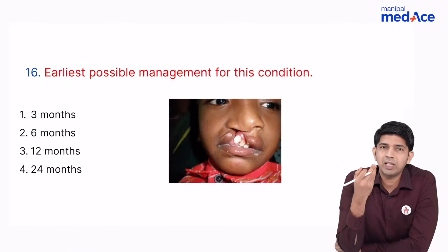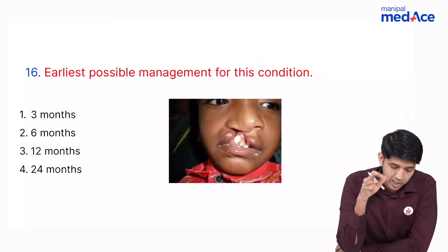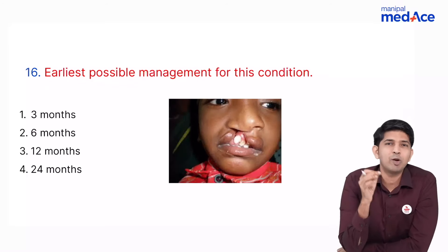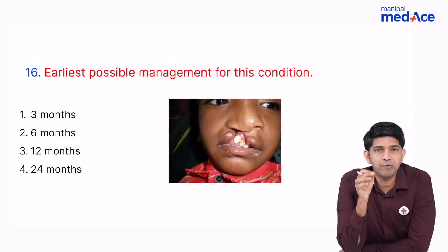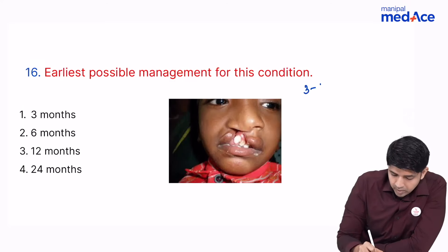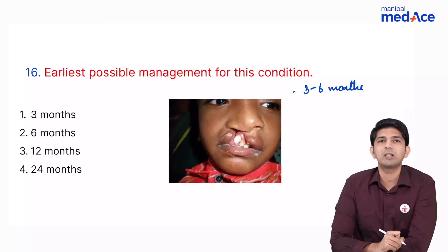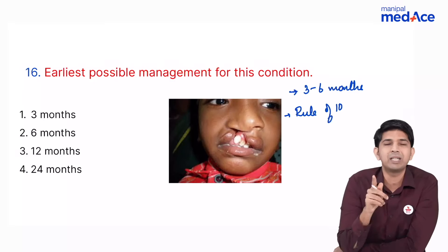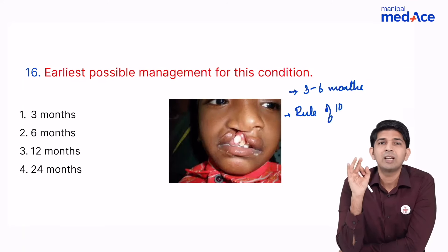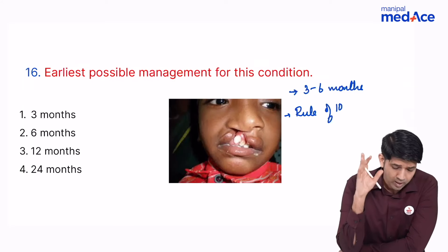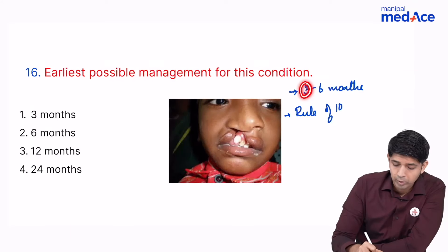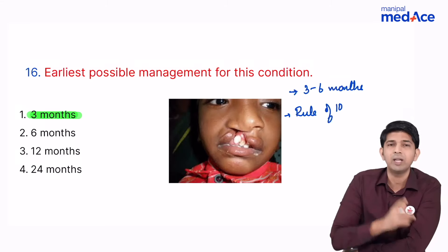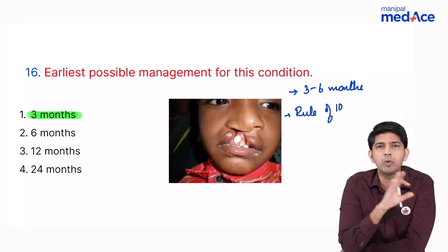An image of a child with cleft lip and cleft palate was given. The question asked when the earliest possible management is. Bailey and Love states the first repair is the cleft lip, starting at three to six months — called Millard's repair — with the rule of ten: 10 kg weight, 10 weeks, 10 grams hemoglobin. Since the question asked for the earliest possible, the answer is three months.